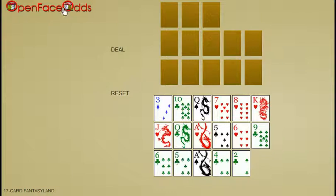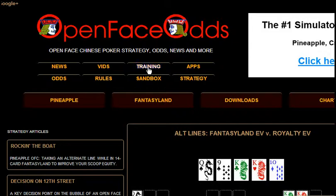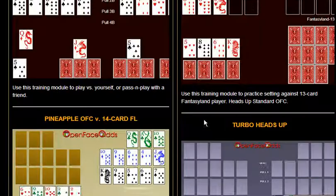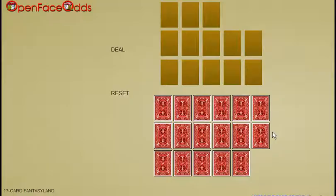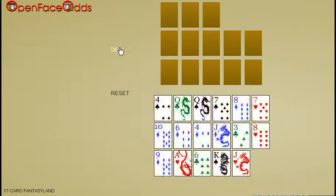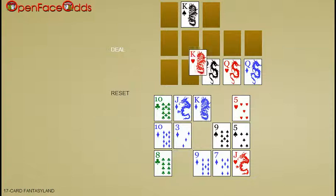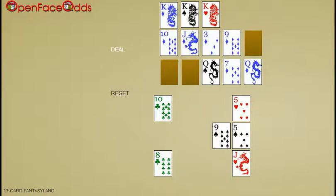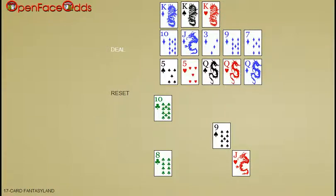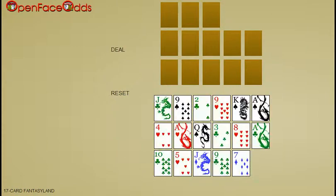And here's how to get to the module. If you go to the home page and go to the training page, just scroll down. You'll find it in 17-card fantasy land, and we'll go and see how many hands in a row we can hit fantasy land. This is a first-hand repeat. Trips in front or quads in back is the qualification.